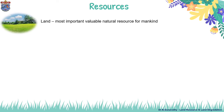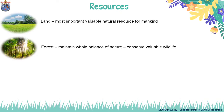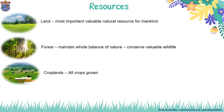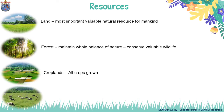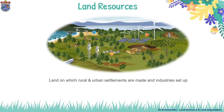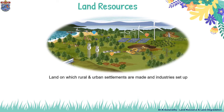Land is the most valuable natural resource for mankind. Forests maintain the whole balance of nature and conserve valuable wildlife. Croplands are upon which all crops grow, and pastures are on which cattle graze. Land on which rural or urban settlements are made and industries are set up are known as land resources. It is most essential to maintain the quality of land.